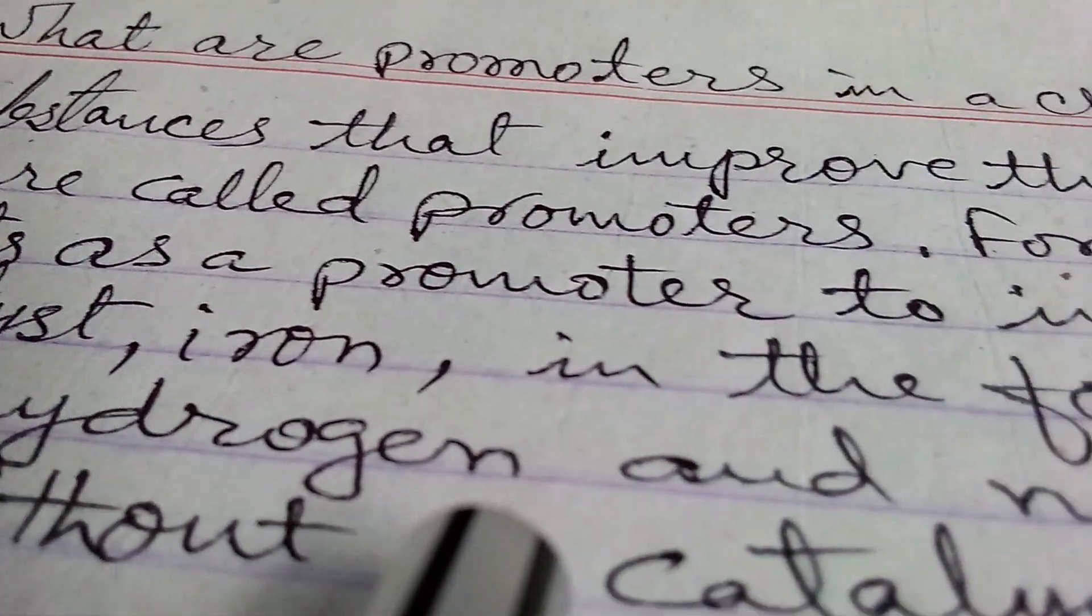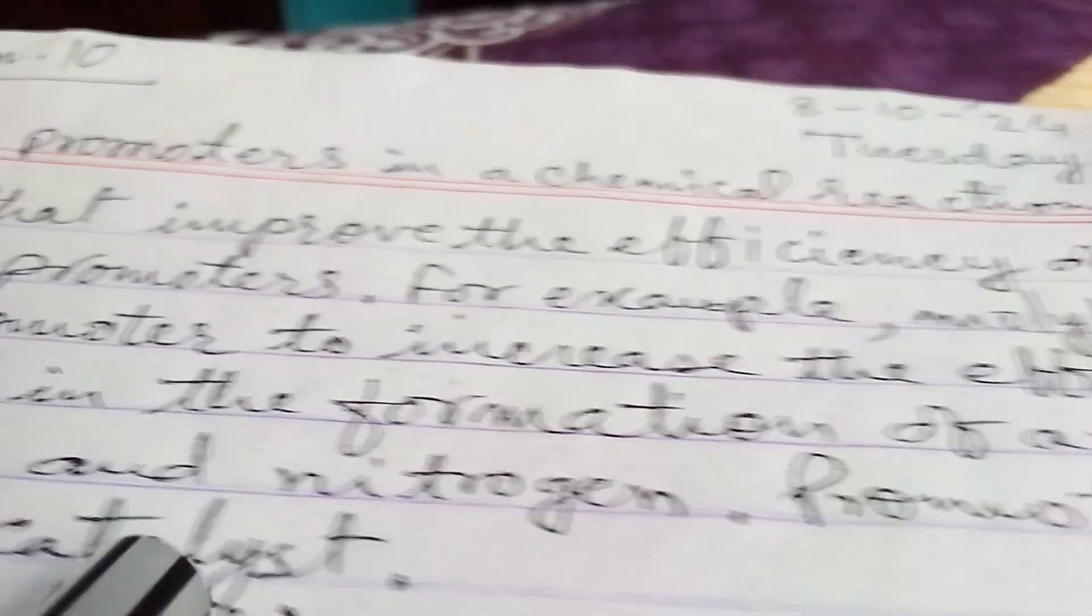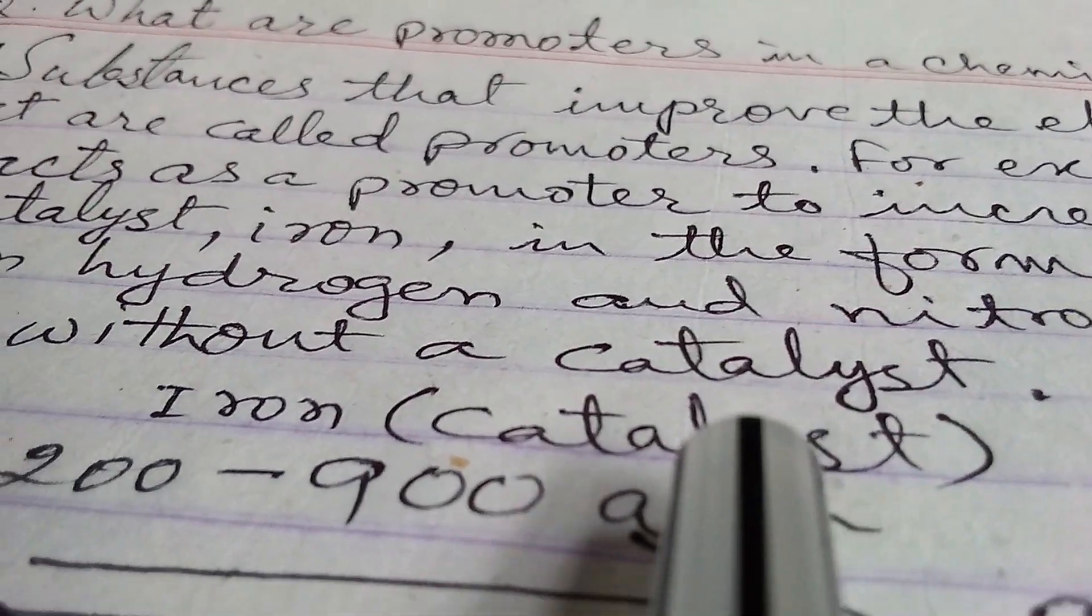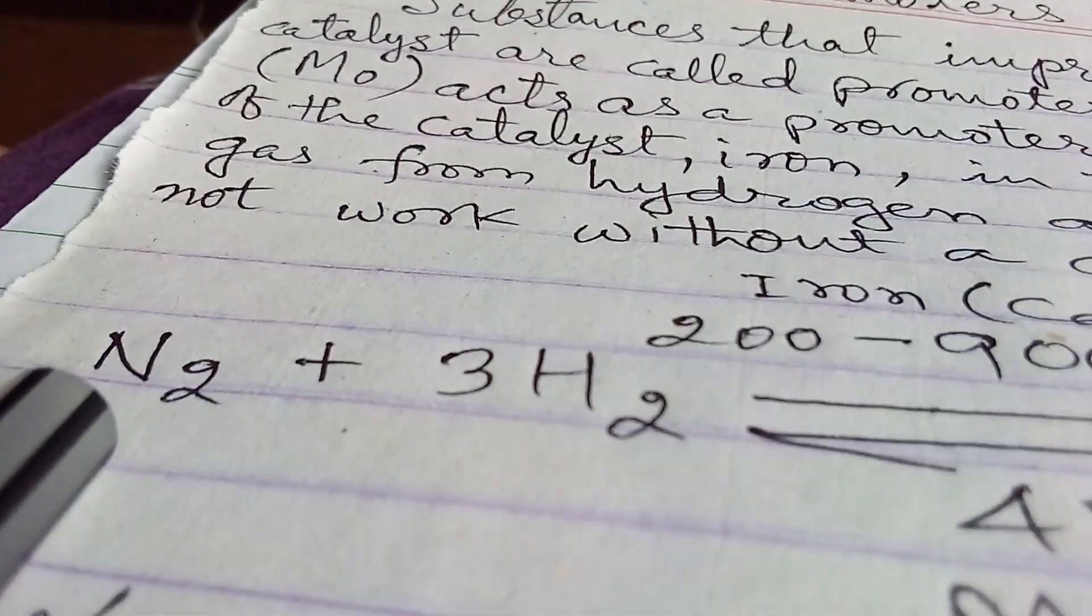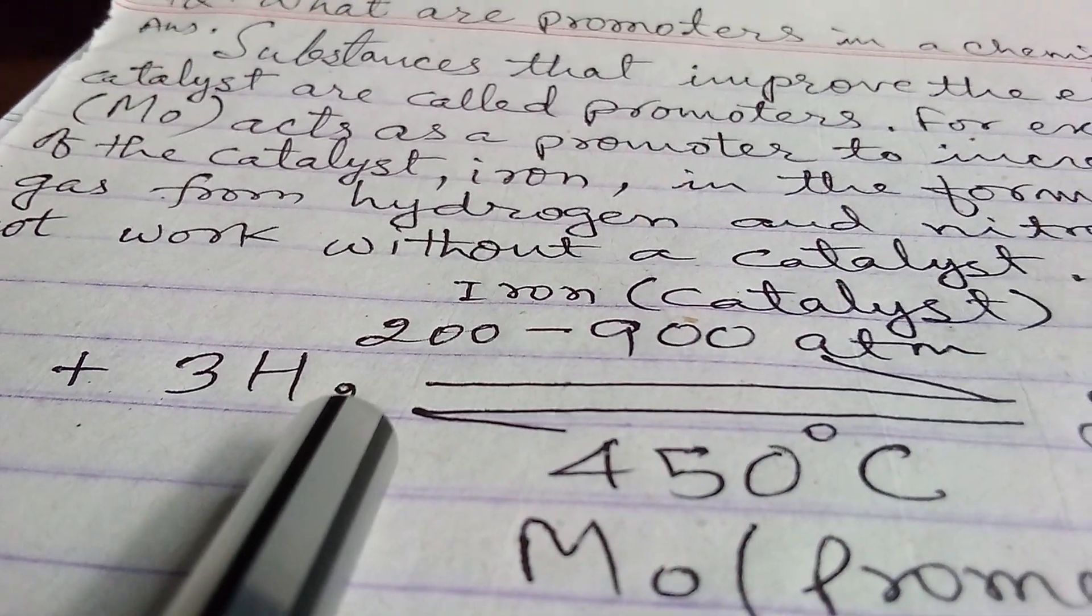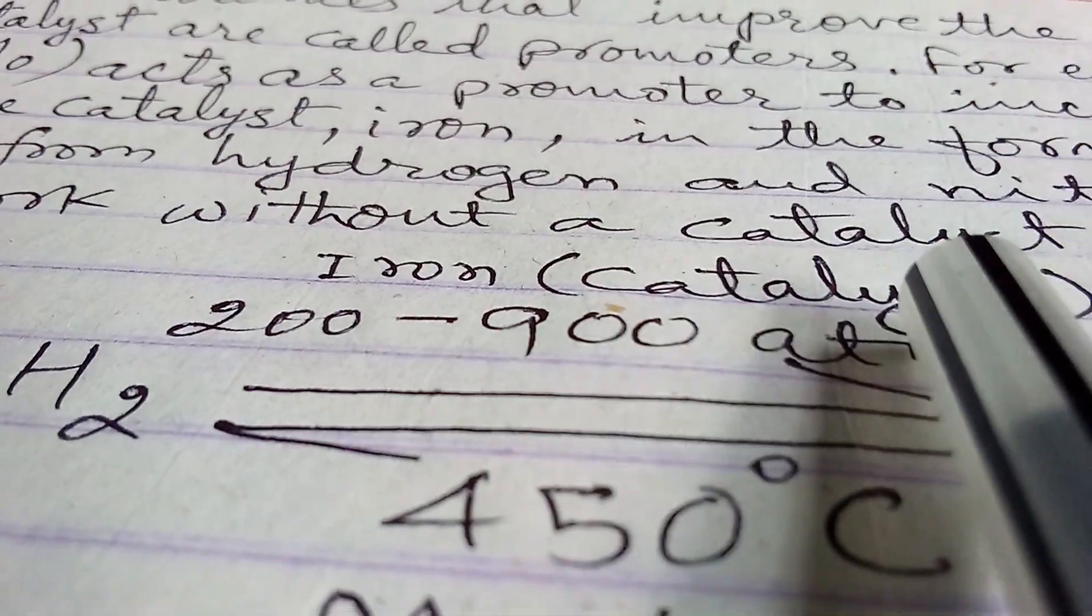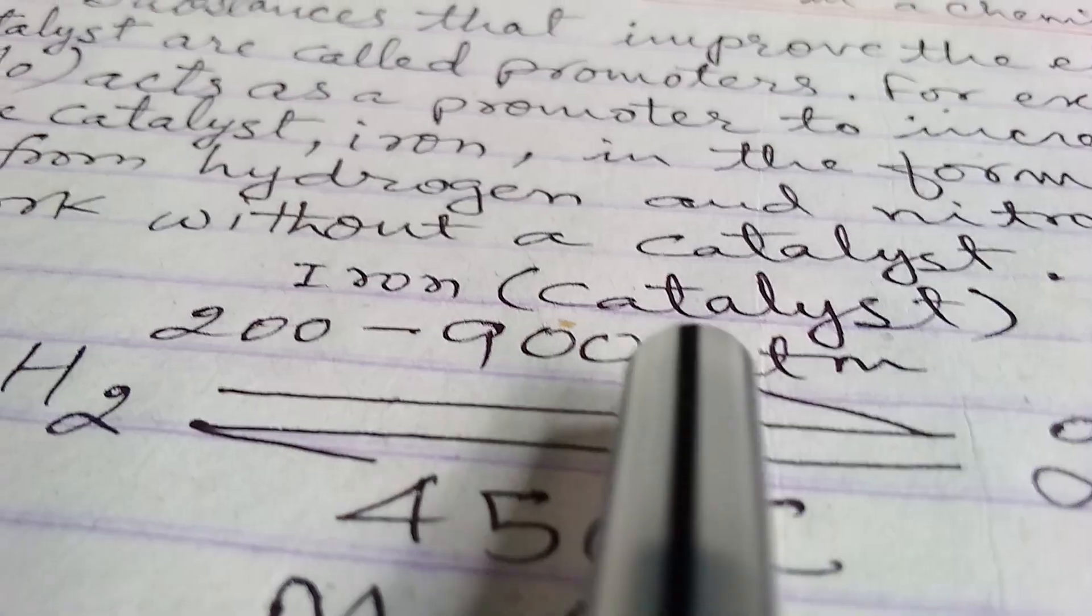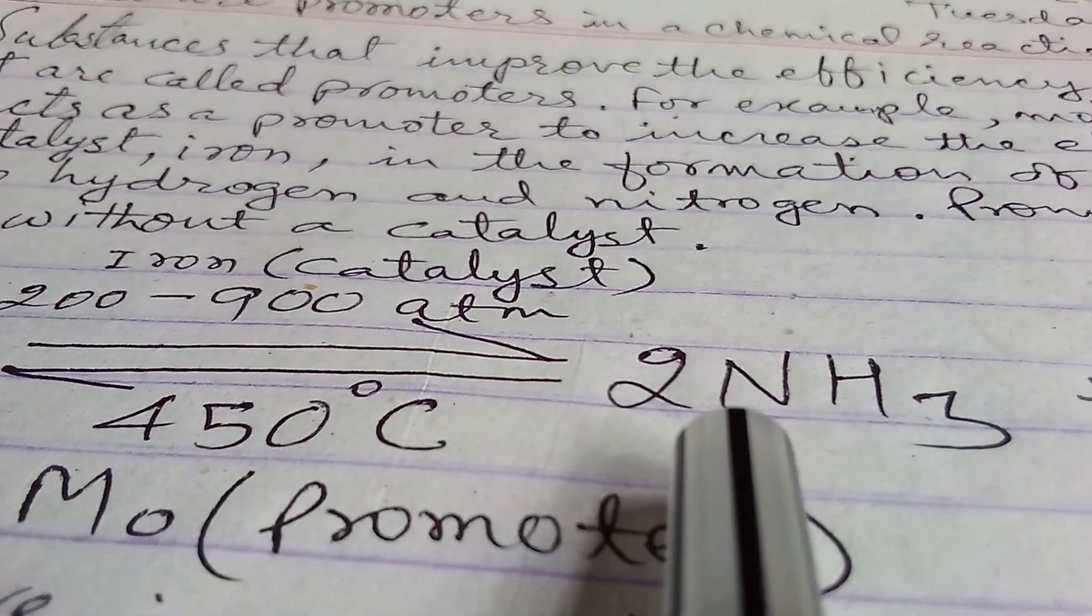from hydrogen and nitrogen. Promoters cannot work without a catalyst. So the reaction is: one molecule of nitrogen and three molecules of hydrogen reacts in the presence of catalyst iron and atmospheric pressure is kept between 200 to 900 and temperature is kept 450 degrees Celsius and then we get